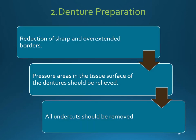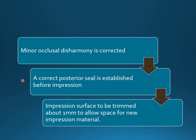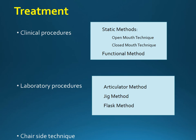Denture preparation involves reducing all sharp borders, reducing any overextension, relieving pressure areas in the tissues, correcting minor occlusal disharmonies, establishing the correct post-palatal seal, and trimming the impression surface by about 1 mm to allow space for the new impression material.